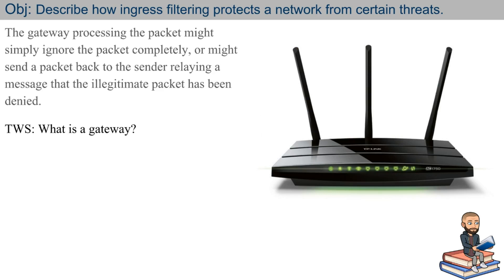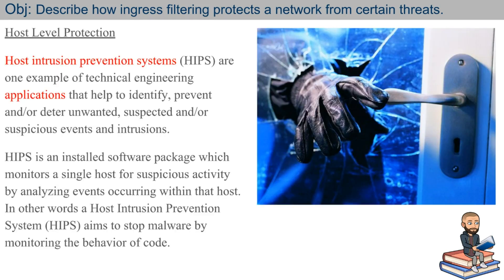The gateway processing the packet might simply ignore the packet completely, or it might send a packet back to the sender relaying a message that the illegitimate packet has been denied. A gateway is just the type of router that has direct access to the internet — the head honcho router in your network. Host Intrusion Prevention Systems, or HIPS, are technical applications that help identify, prevent, and deter unwanted, suspected, or suspicious events and intrusions. HIPS is an installed software package that monitors a single host for suspicious activity by analyzing events occurring within that host.